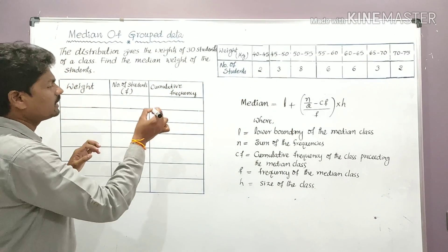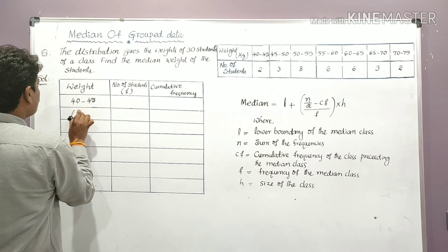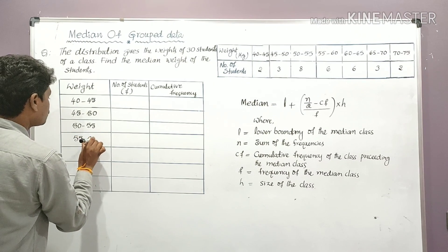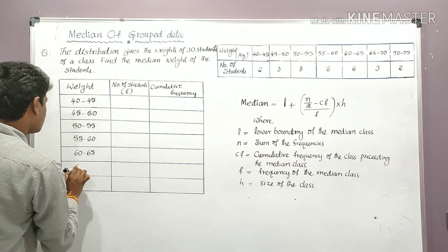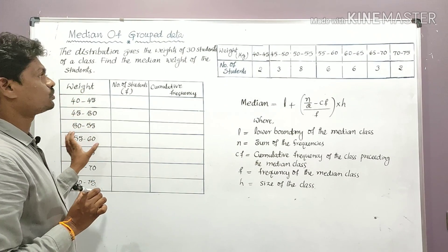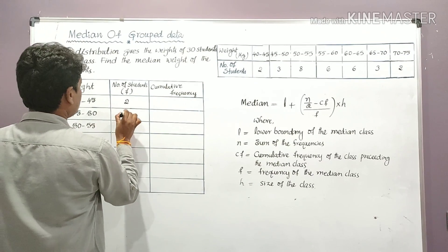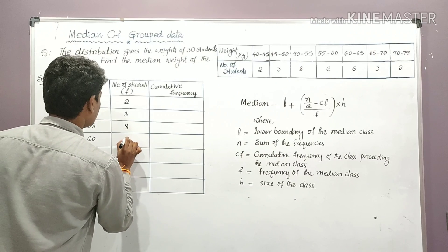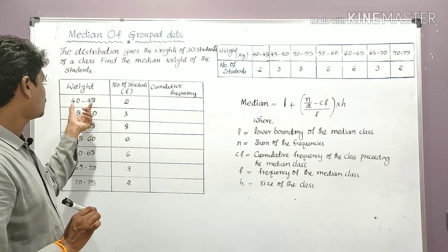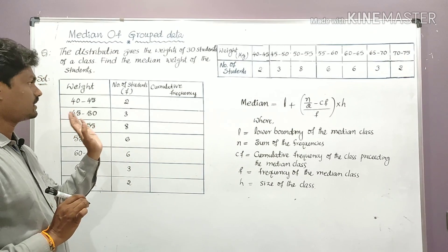The weight intervals given are: 40–45, 45–50, 50–55, 55–60, 60–65, 65–70, and 70–75. The number of students (frequencies) in each interval are: 2, 3, 8, 6, 6, 3, and 2 respectively.